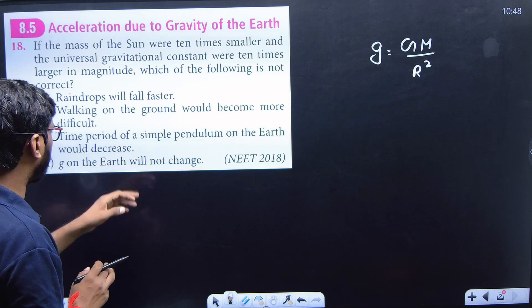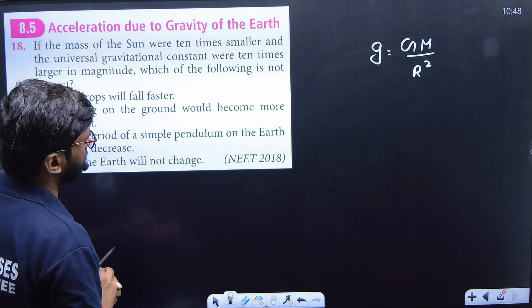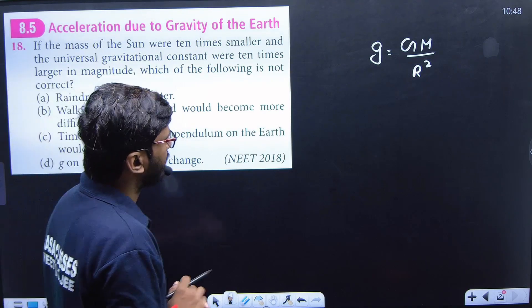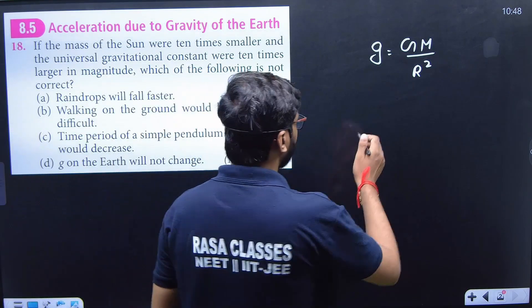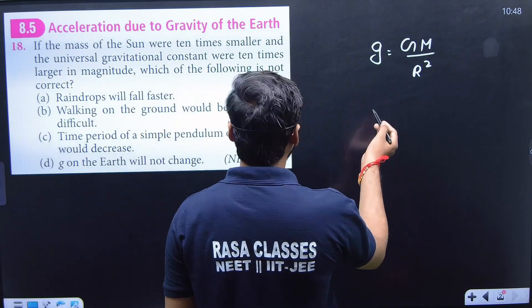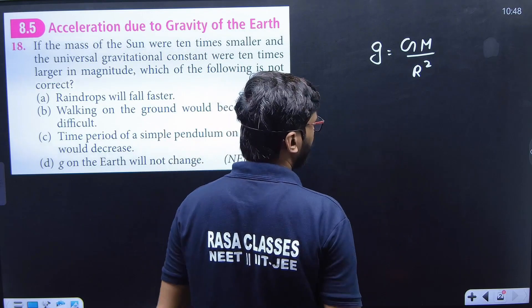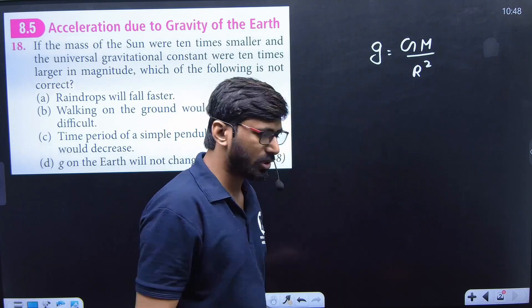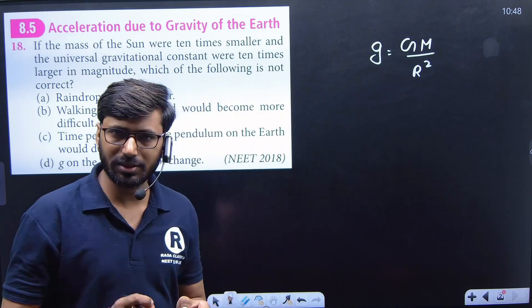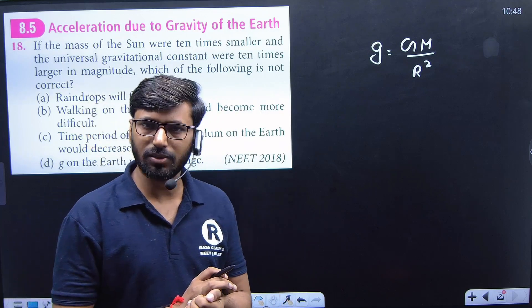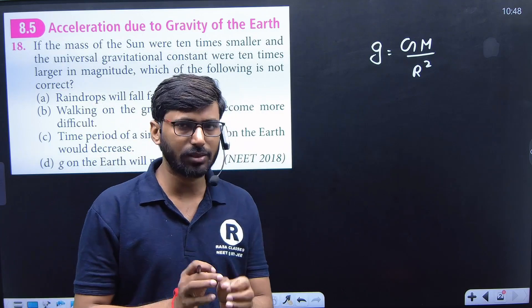g on the earth's surface will not change. The mass of the sun will not change the acceleration due to gravity, because in the formula for acceleration due to gravity, the mass of the sun does not appear.